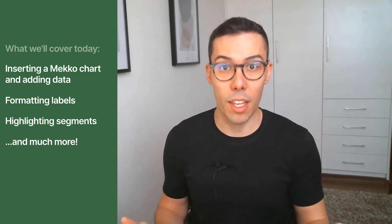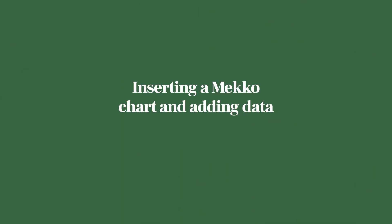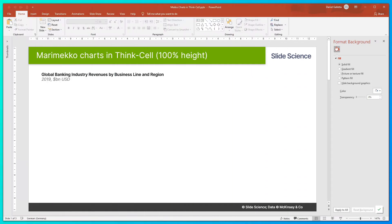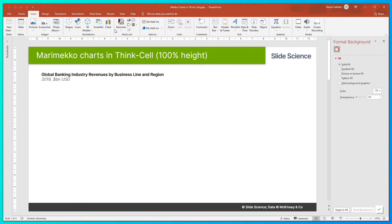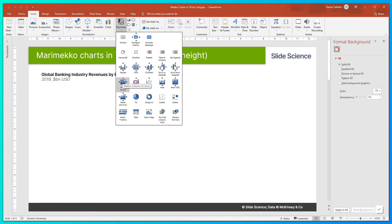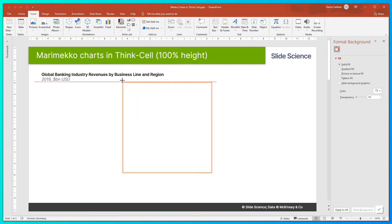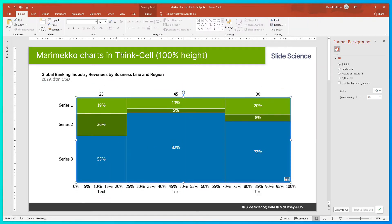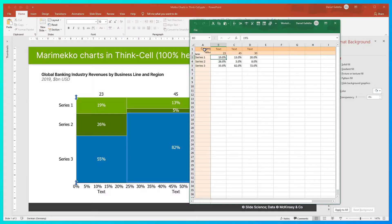So if that sounds good, let's jump into it. To insert the chart, click on Insert, Elements, and in this case we'll drop in Mekko Column Percent Axis. Now it's time to drop some data in. To do that, double-click on the chart. I have some pre-prepared data, so I'll just drop that in by pressing Ctrl+V.